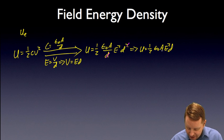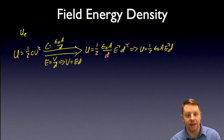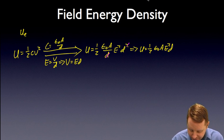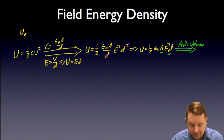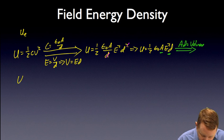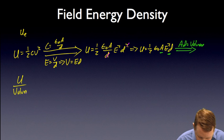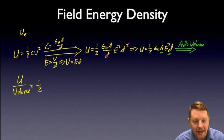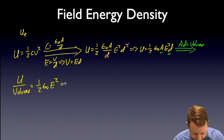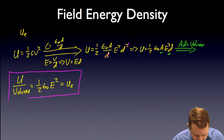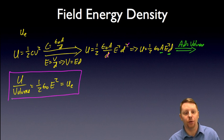We can do a little simplification — the D terms simplify — and get U equals one half ε₀ A E² D. But A times D is the volume of the region where we're creating the electric field, that's the volume between the capacitor plates. So since AD equals our volume, we can write that U divided by our volume must be equal to one half ε₀ E². The energy stored per volume is our field energy density U_E.